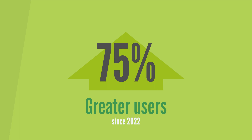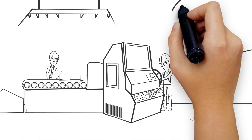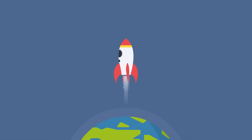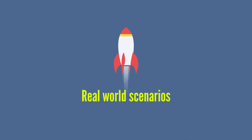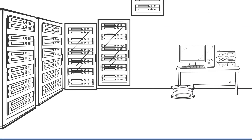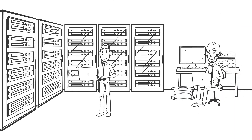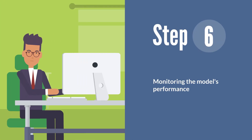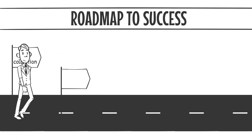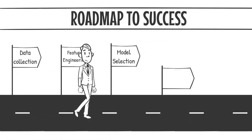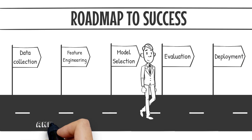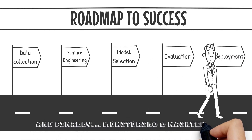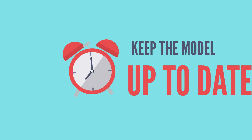Once the model is performing well, it needs to be deployed to a production environment where it can be used to make predictions or decisions in real-world scenarios. This step involves integrating the model with existing systems and infrastructure. Finally, the model's performance must be monitored over time to ensure it continues to perform well, and any necessary updates or maintenance must be performed to keep the model up to date.